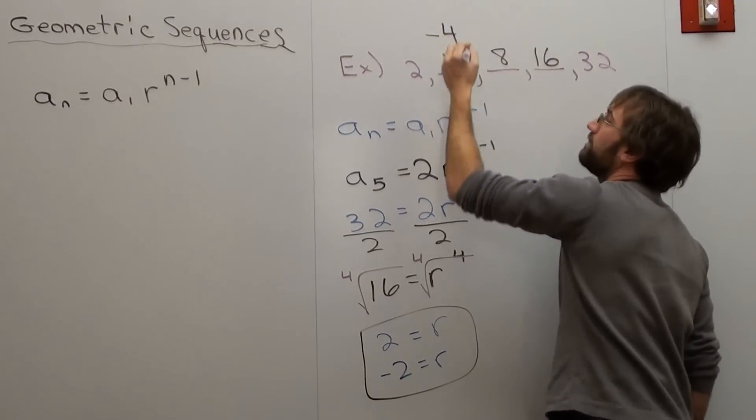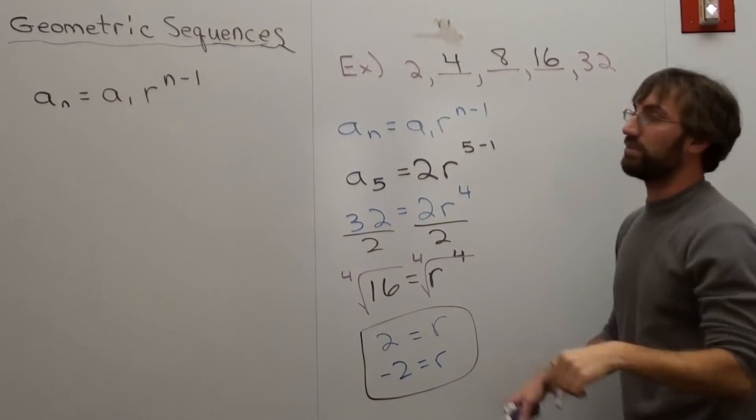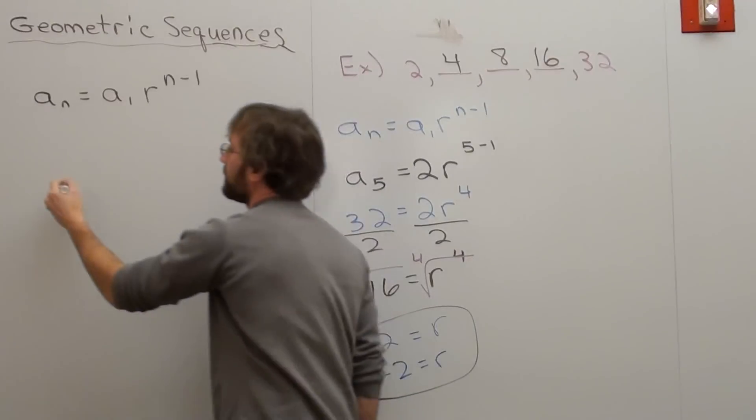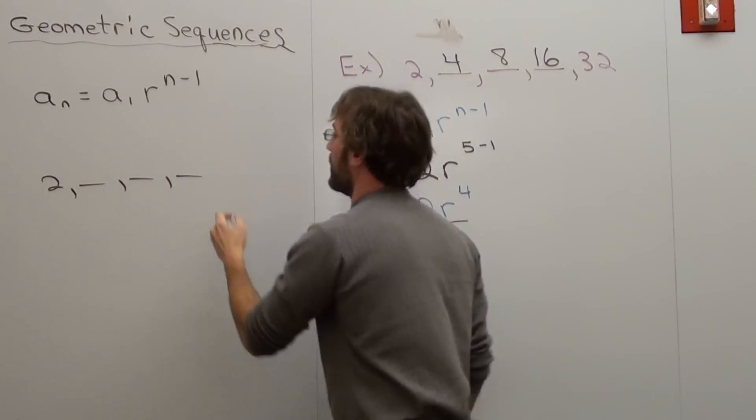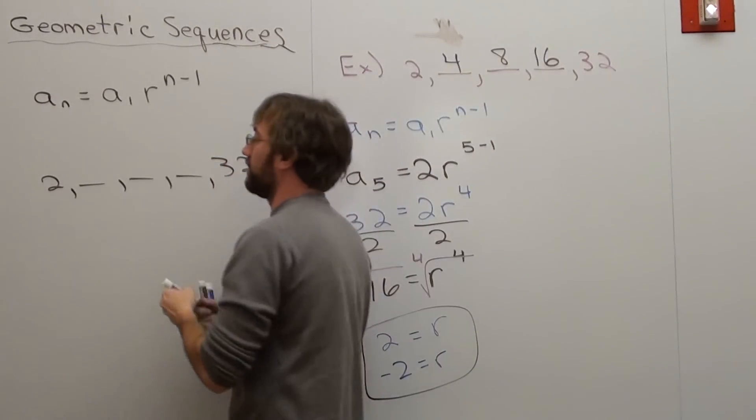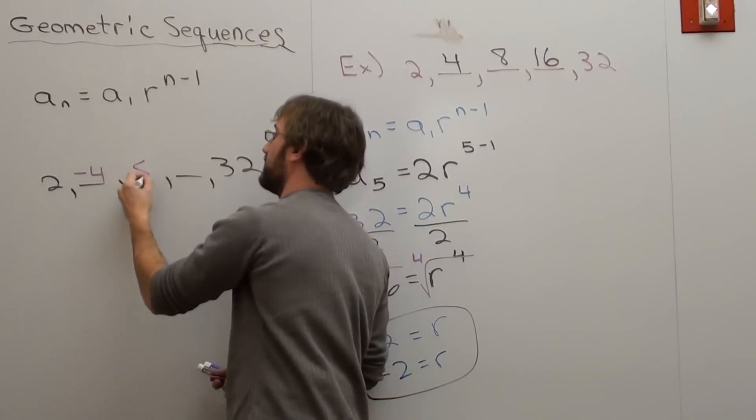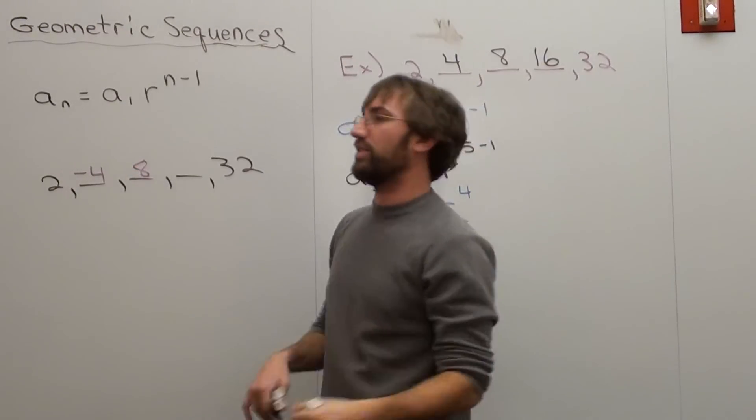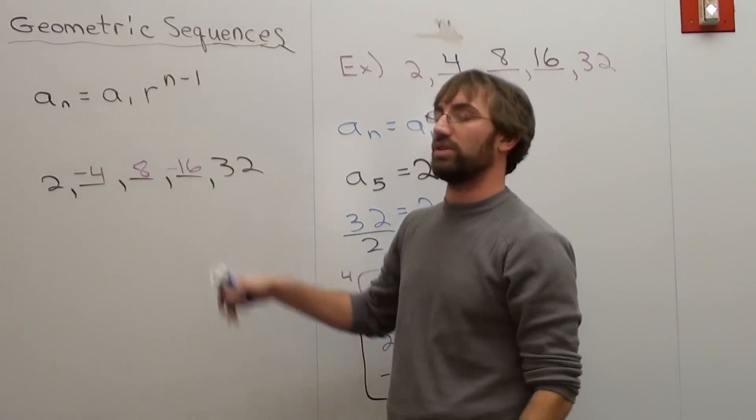2 times negative 2 is negative 4. Can you see that? I'll go ahead and write it here. 2 times negative 2 is negative 4. Multiply by negative 2 is 8. Multiply by negative 2 is negative 16. Multiply by negative 2, and it will equal 32.